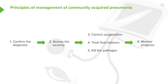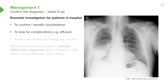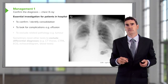Confirming the diagnosis is essentially done with a chest X-ray. If you think the patient has crackles over the right lung and they're presenting with a fever, you need to know whether there's consolidation present. A chest X-ray might show lobar consolidation, as shown in the right lower lobe. It's also very important to do a chest X-ray to look for complications, which we'll discuss later, largely including pleural effusion.